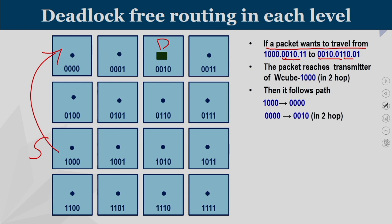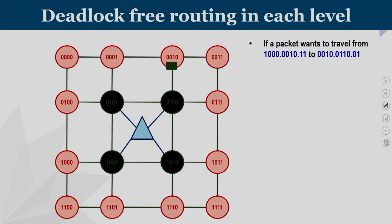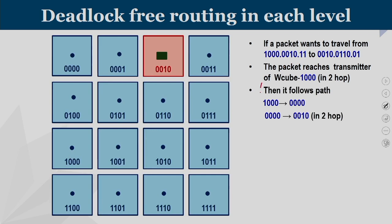From 0000, we move into 0010, so in two hops we reach the W-cube of our destination. From W-cube 1000 the packet reaches the transmitter. The packet reaches the transmitter of its W-cube in 2 hops, then follows the wireless path from 1000 to 0000. The packet is now at the destination W-cube.